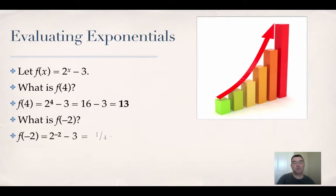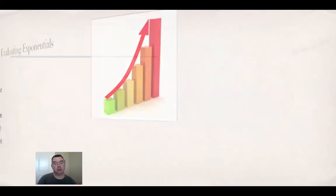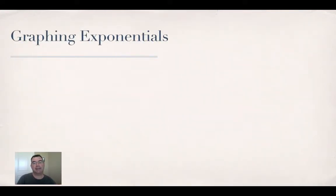f to the negative 2 would be 2 to the negative 2 minus 3, which is 1 fourth minus 3, which is negative 2 and 3 fourths. And f to the 0 would be 2 to the 0 minus 3, which is 1 minus 3, which is negative 2. So just giving you an idea of how to plug x's into those functions.